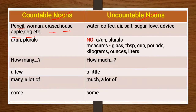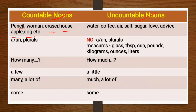Similarly, we can say two women, two erasers, three houses, four apples, five dogs, etc. And if we are talking about singular countable nouns — that is, if we are talking about one pencil, one woman, or one eraser — then we need to use the article A or AN.